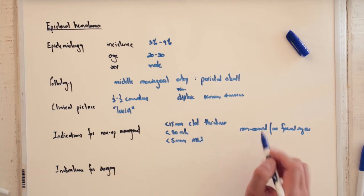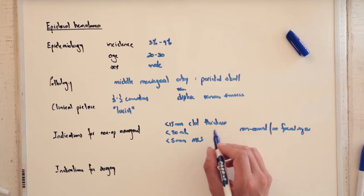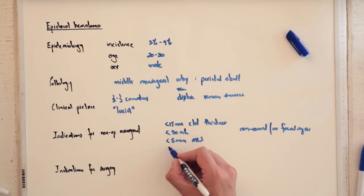The ones that usually do well or this kind of patients, usually ones with bleeding overlying the temporal lobe, are usually the ones in this sort of category.